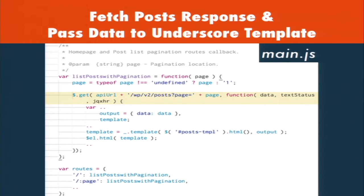In list_posts_with_pagination I'm passing in a page parameter — if it's undefined I set it to 1, which is the same as the home page with no pagination. I'm then going to pass that to the API. The API URL variable is /wp-json, and the posts resource is wp/v2/posts. If you visit wp-json on a site you can get this information. I pass the page parameter so I can reuse the same function on page 2 or page 3.